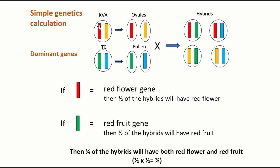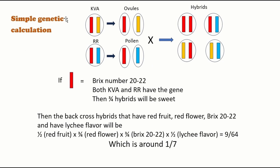In this situation the dominant gene is only in one of the parents, but not the other. What happens if both parents have the dominant gene? Like when KVA backcrosses with RR — if the red bar now represents the high Brix number gene, which is probably a dominant gene, in this situation both KVA and RR have a copy. After segregation and recombination, you can see that three out of four hybrids have the red gene. And because it's dominant, even one copy will express that phenotype, so three out of four hybrids will have this phenotype.